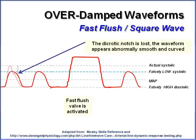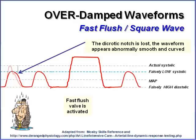An overdamped waveform is something we want to troubleshoot. On the picture, the normal arterial line waveform is highlighted in pink, and when you look at the red waveform, the dicrotic notch has been lost. When we do our fast flush, it's a slow upstroke that slowly comes back — there are no oscillations afterward.